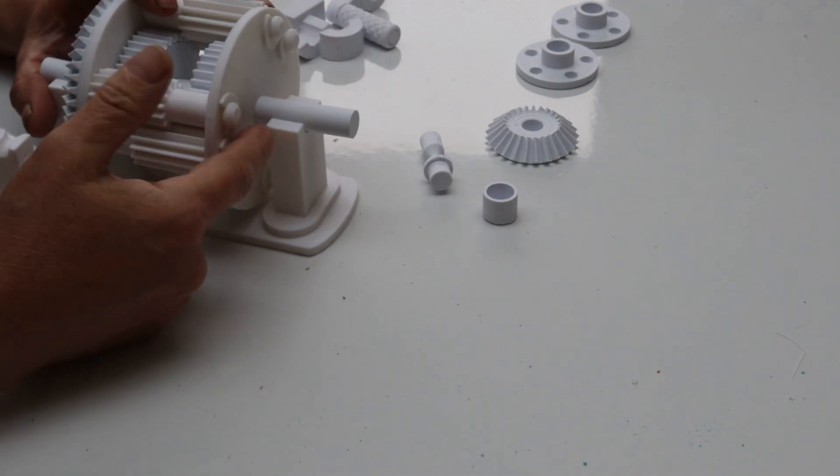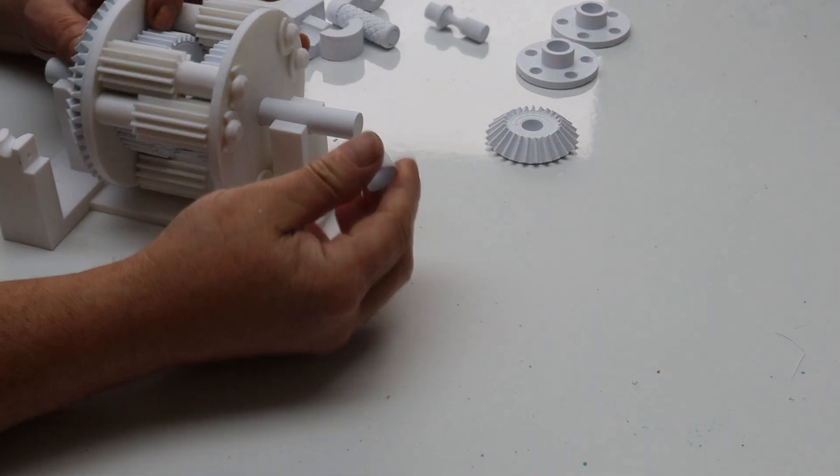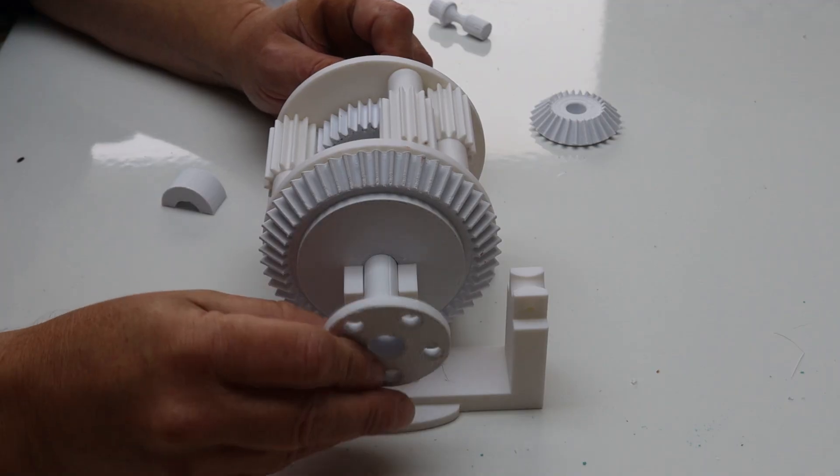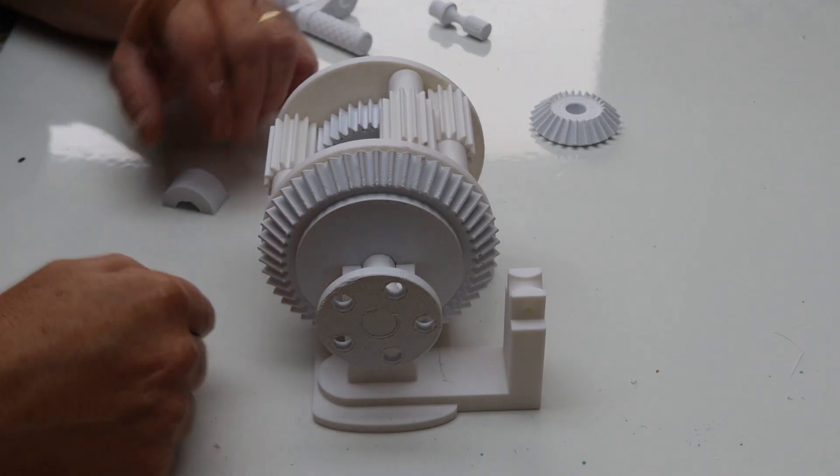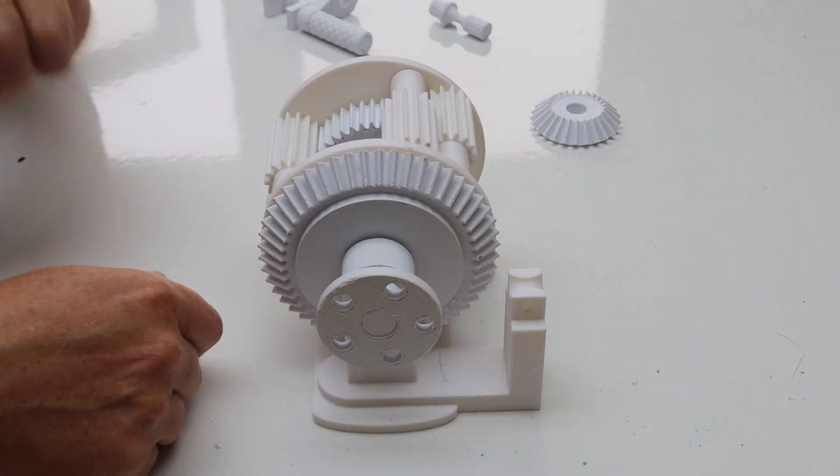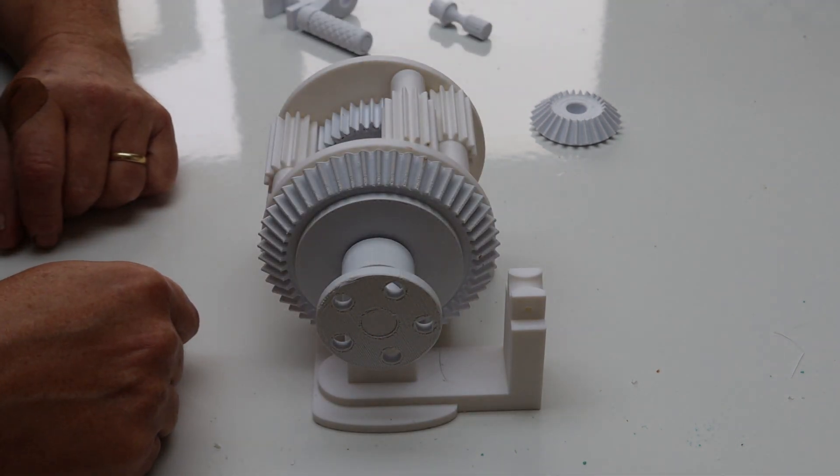Oops, my mistake. A spacer goes on here. This small spacer. So pop that small spacer on, then drop it into its frame. Add the flange connectors. Don't push it on too tight, otherwise you'll lock it to the frame, glue them on, and then add the clip on there to hold it into the frame, and do that both times.